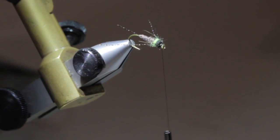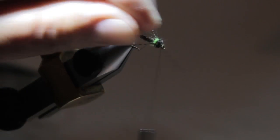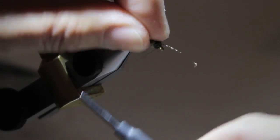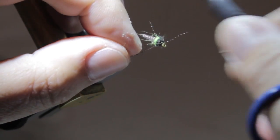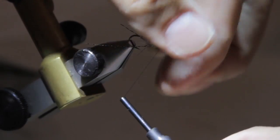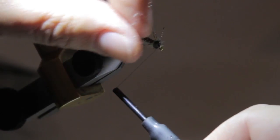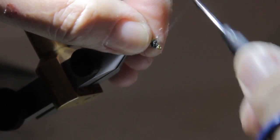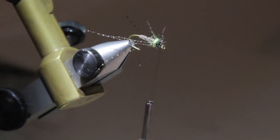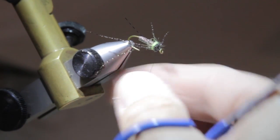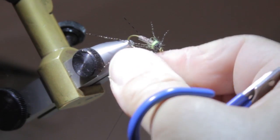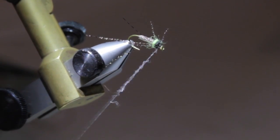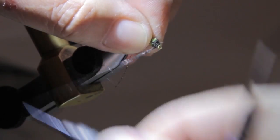Another set of crystal flash legs. A small amount of black dubbing just in front of that to create the taper of the head and to wedge that last little bit of crystal flash legs there.